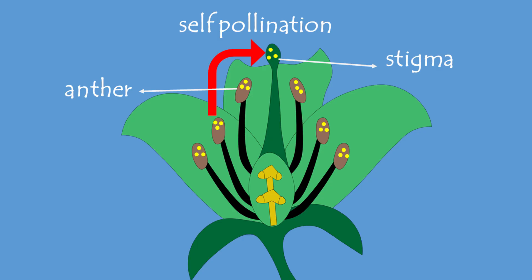Together, the stamen in a flower works to produce pollen, which is then transferred to the stigma of the pistil for fertilization, ultimately leading to seed production.